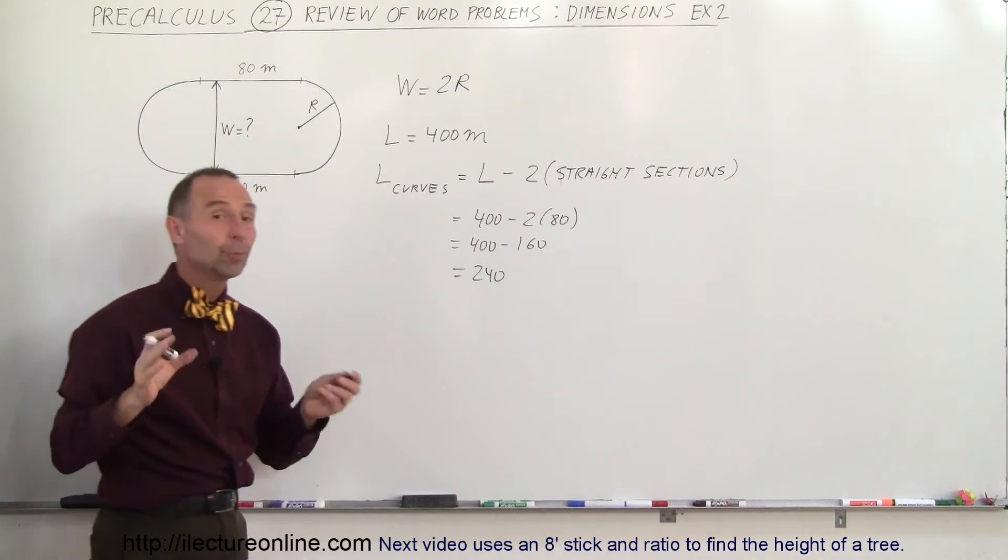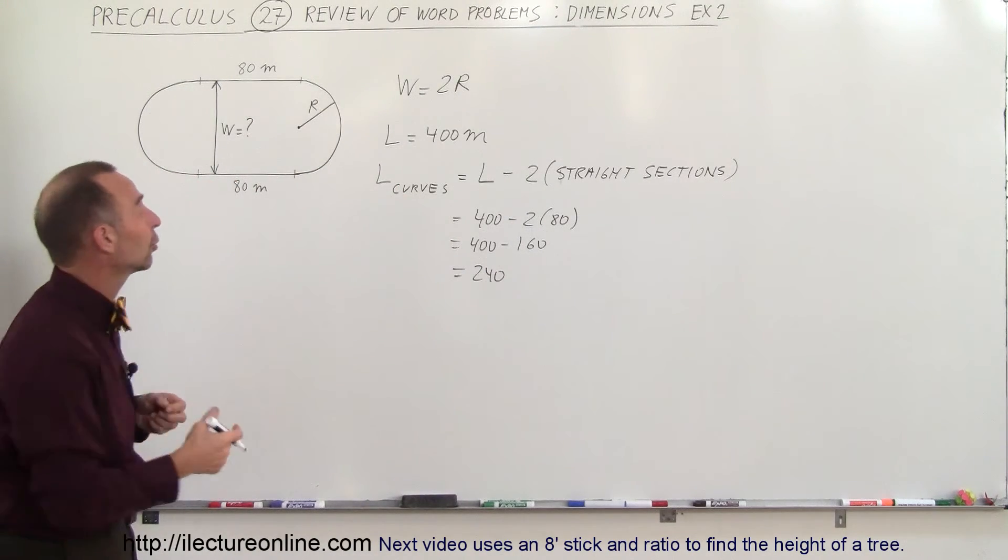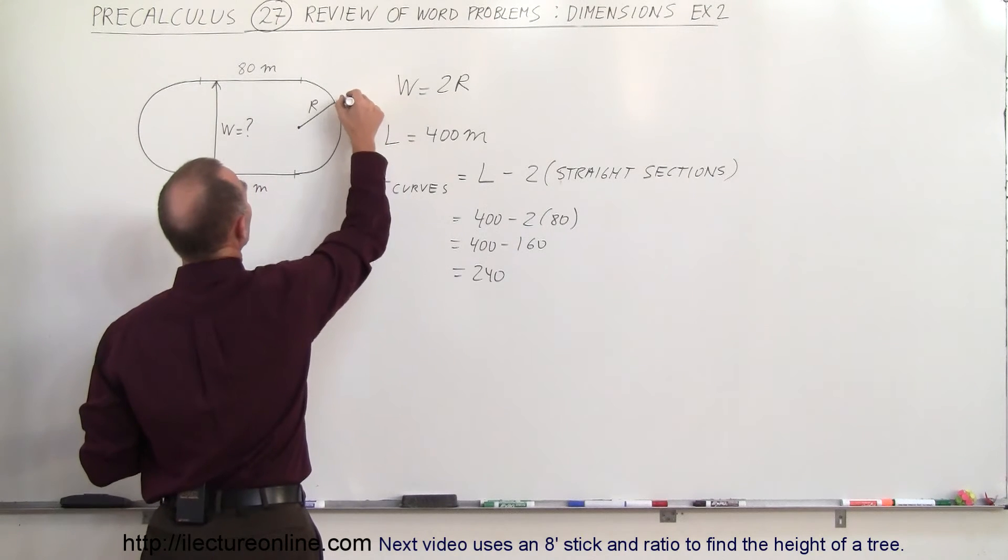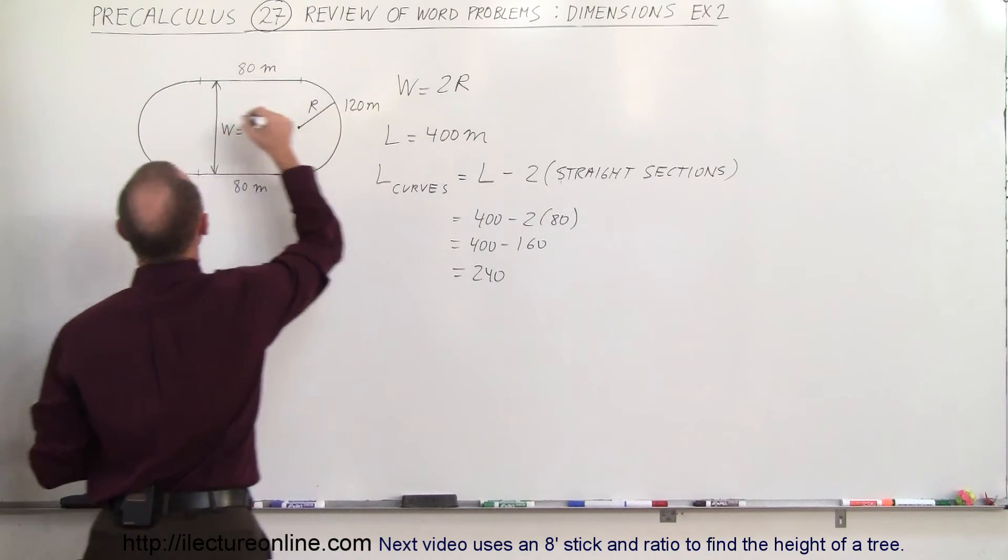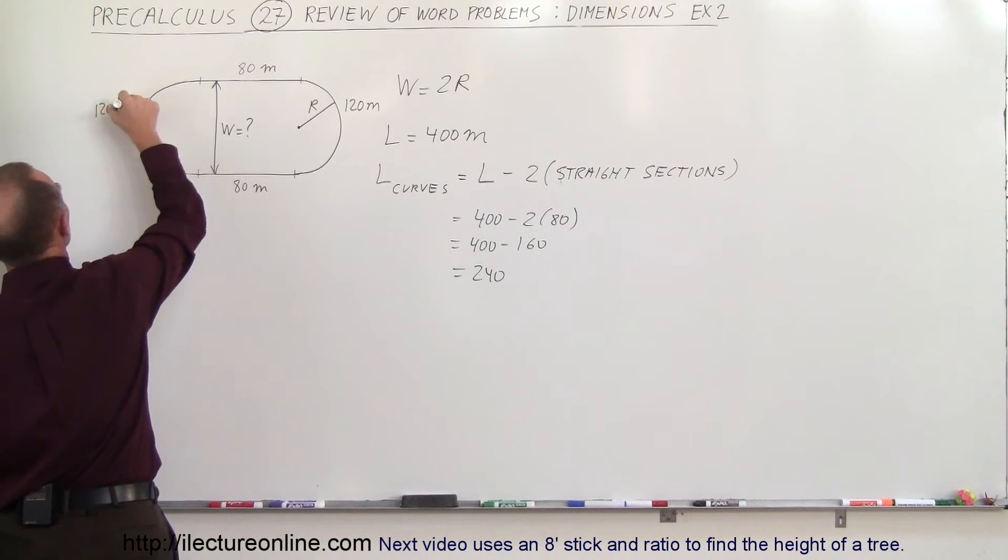That would be the length of both curves, so the length of each curve is 120 meters, half of that. That means we have a 120 meter curve here and a 120 meter curve over there.